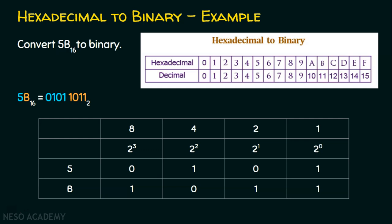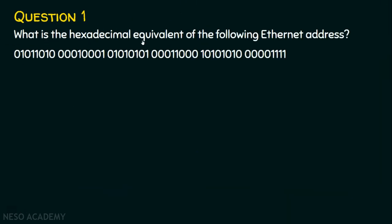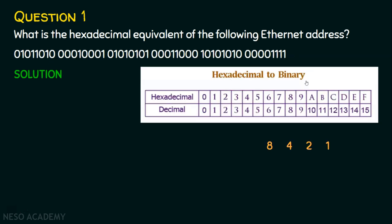Now we will dive into question number 1: What is the hexadecimal equivalent of the following Ethernet address? We are given a binary address and required to convert binary to its equivalent hexadecimal. We know every Ethernet address is 6 bytes — byte 1, byte 2, byte 3, byte 4, byte 5 and byte 6. We are concerned about these 6 bytes and will follow the same 8421 notion.